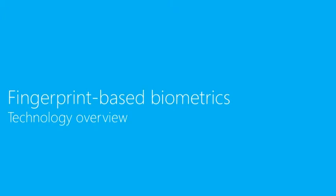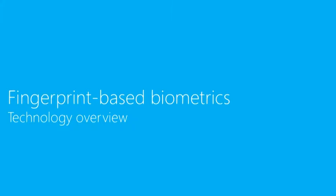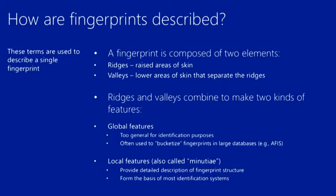Before going into details on how Windows-based devices can leverage fingerprint readers, I want to build some context on the basics of fingerprint technology. A fingerprint is composed of two parts: ridges and valleys. The ridges are the raised areas of your skin, and the valleys are the lower areas between the ridges. Together, the ridges and valleys make two kinds of features: global features, which are too generic for identification and are used to bucketize fingerprints in databases like AFIS, and local features, also called minutia, which provide a very detailed view of your finger and are the basis for authentication on most computing devices.